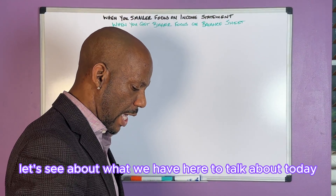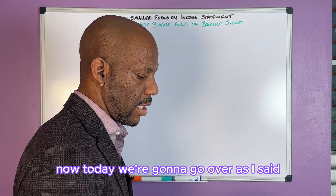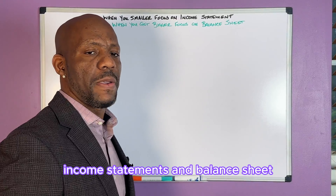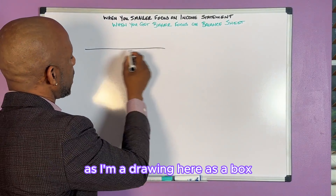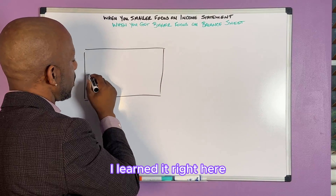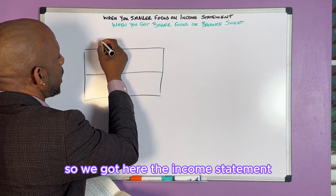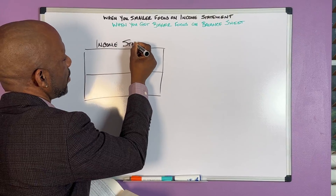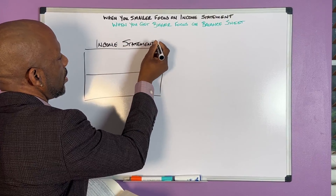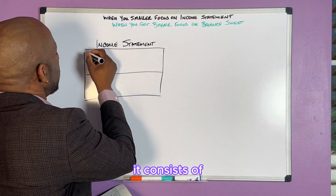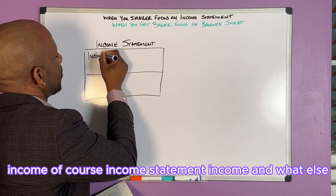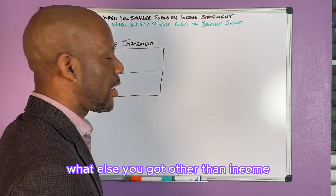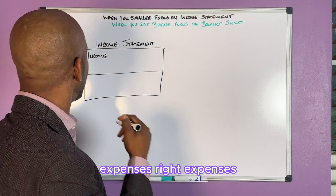Today we're going to go over income statements and balance sheets. I'm going to draw the income statement here as a box — that's how I learned it. The income statement consists of income, of course, and what else? Expenses. So we've got income and expenses.